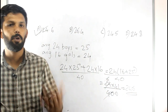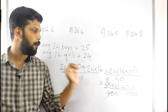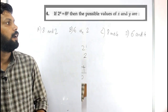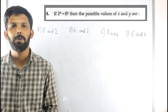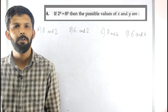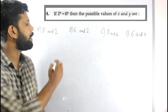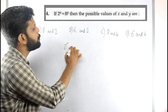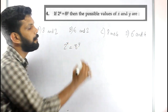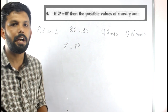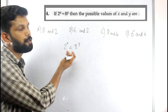That is how we solved the average problem very easily using our method. The fourth question is: if 2 raised to x equals 8 raised to y, then find the possible values of x and y. We have the numbers 2 and 8, and we need to solve the pattern.